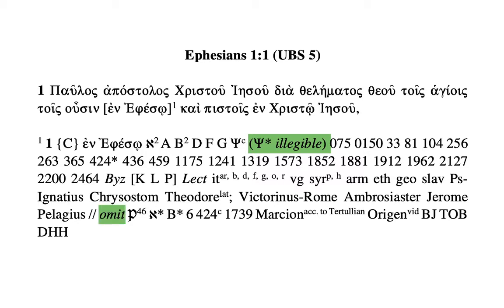The reason the original hand of C is illegible is easy to understand if you look at a picture of the manuscript — the first few lines of Ephesians have been completely overwritten in new ink, so you can't read what's underneath. That's unlike the corrections in Aleph or B, which are typically marginal or interlinear corrections where you can plainly see the original and later hand. In manuscript C, the correction has completely defaced the text underneath, making it illegible.